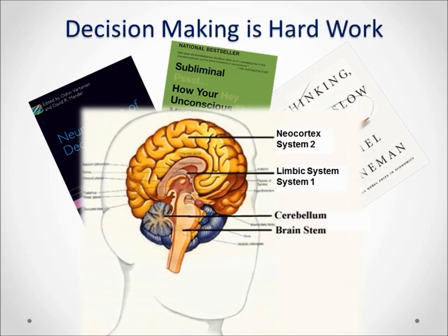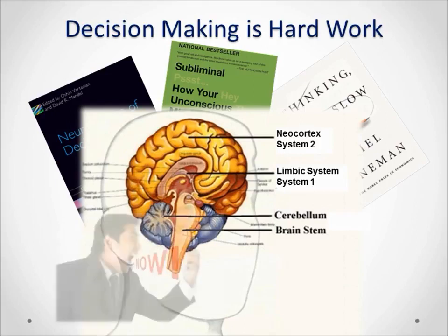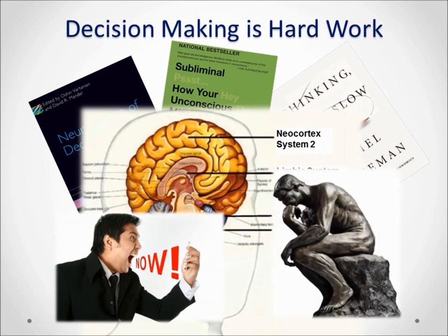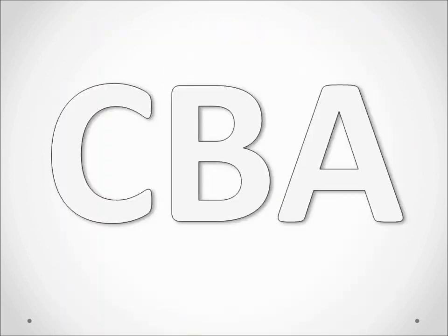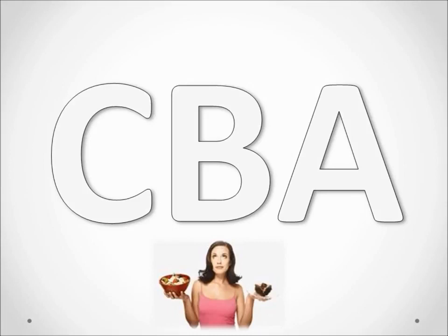Researchers point out that the problem with many important decisions is that they are made using the wrong system in our brains. In high-pressure environments we tend to function in System One decision making when mental energy is near exhaustion. One of the benefits of the CBA process is to provide a safe framework for good rational judgment by moving decision making out of System One and into System Two.